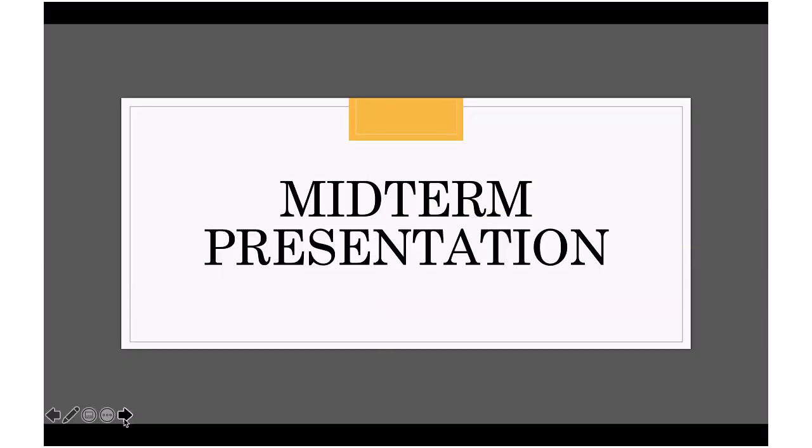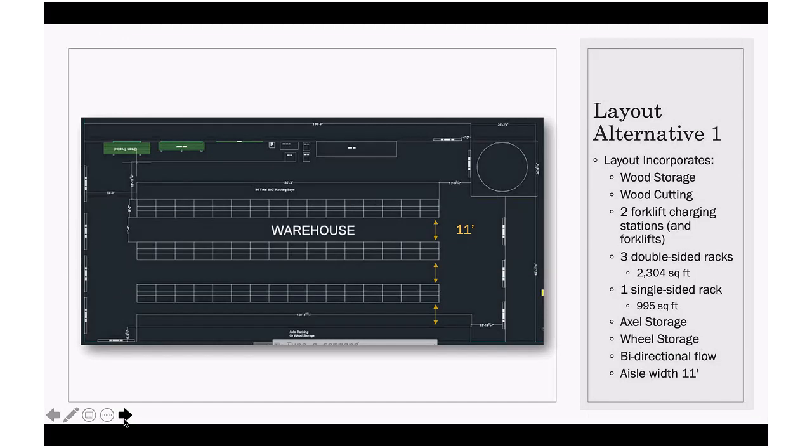To briefly go over the midterm presentation, this is the layout alternative that the sponsor and team moved forward with. It incorporates wood storage area, wood cutting area, two forklift charging stations, and three double-sided racks that sum up to 2,304 square feet in storage space, and one single-sided rack that is 995 square feet. We also have axle storage, wheel storage, and the flow is bidirectional along with an aisle width of 11 feet.